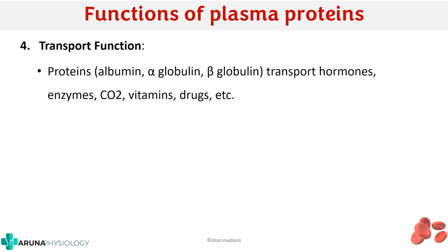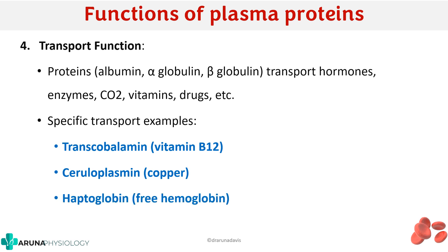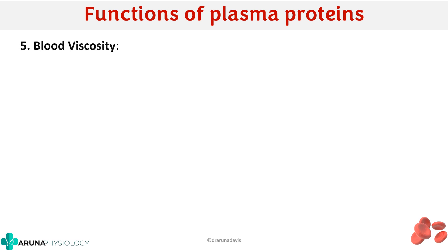Plasma proteins also have an important role in transport. Proteins like albumin and alpha-globulin transport specific things in the blood — enzymes, carbon dioxide, vitamins, and drugs. There are also specific transport proteins: transcobalamin transports vitamin B12, ceruloplasmin transports copper, haptoglobin carries hemoglobin, and transferrin carries iron.